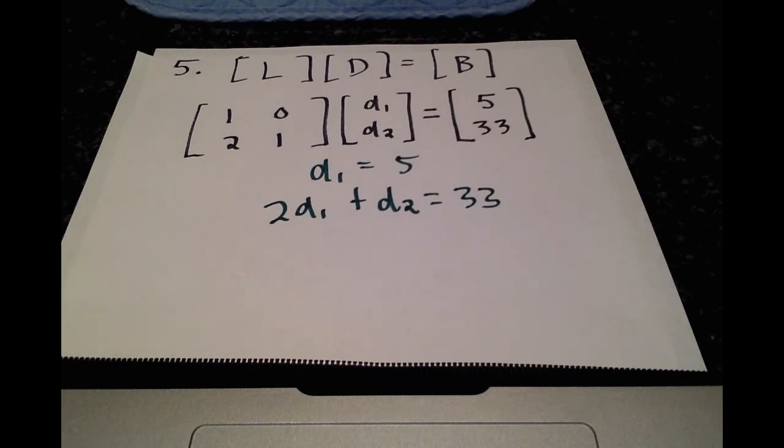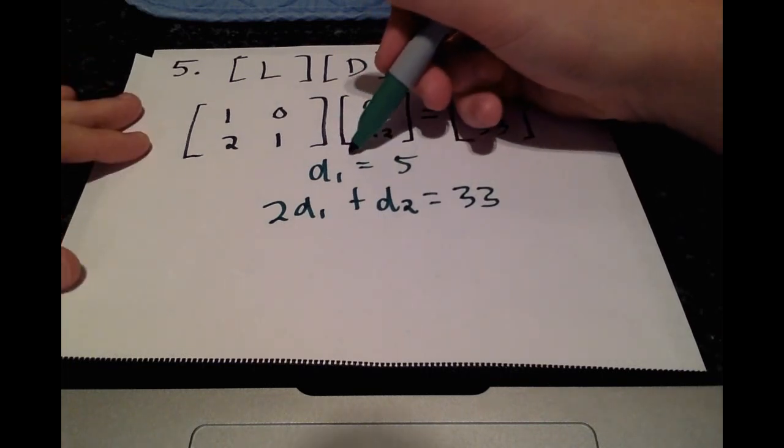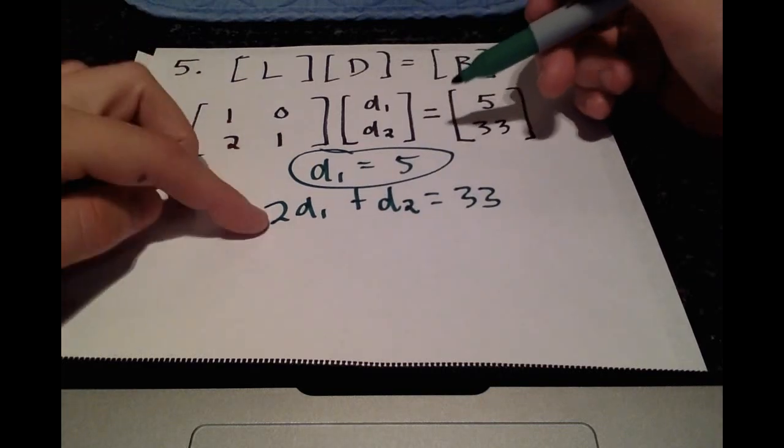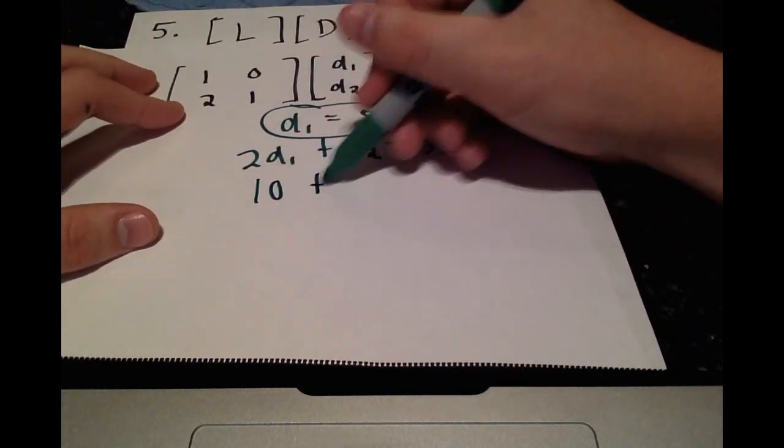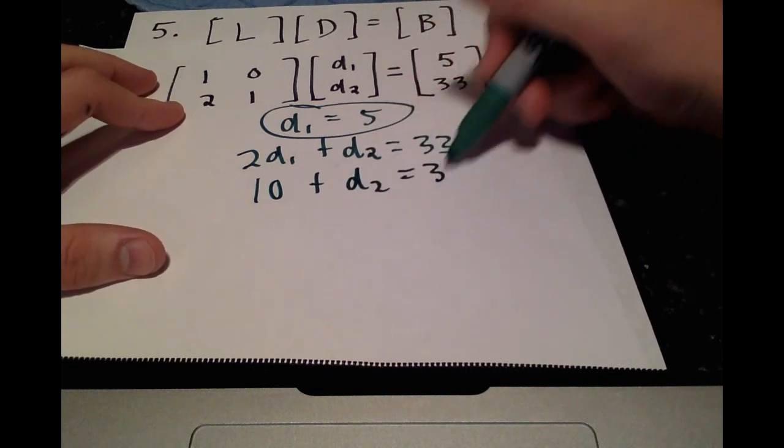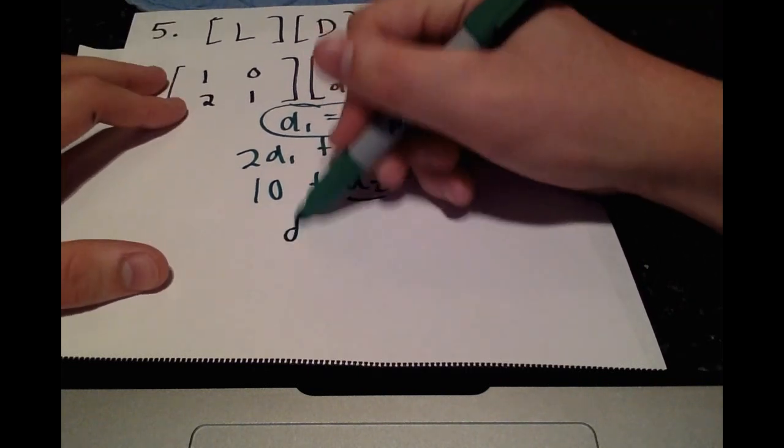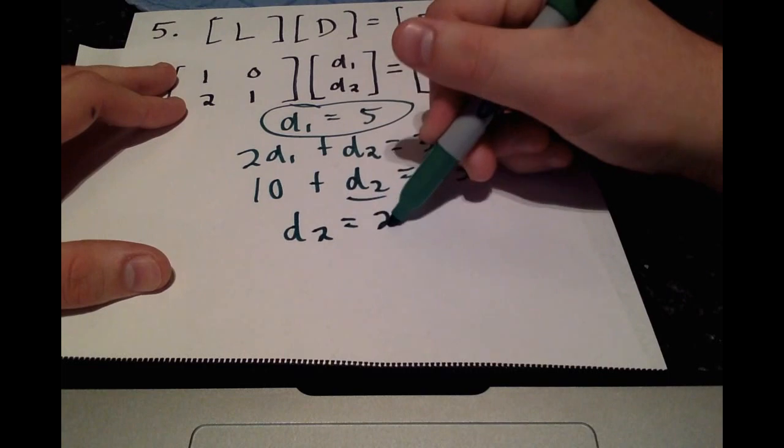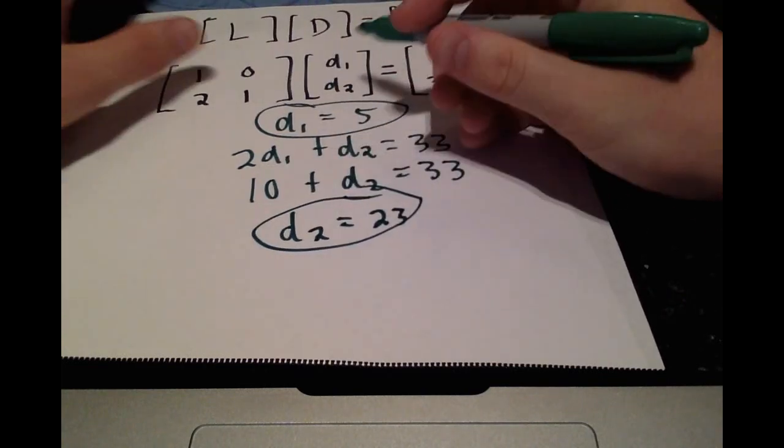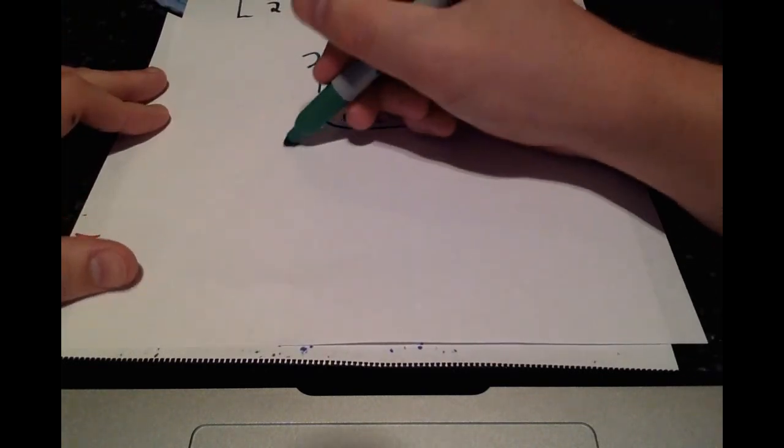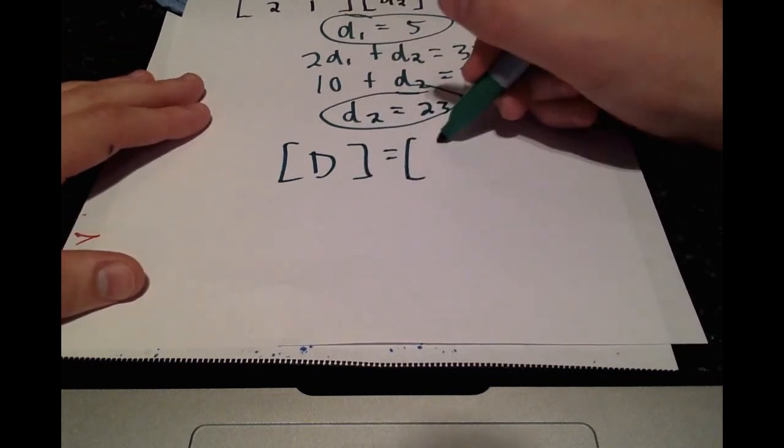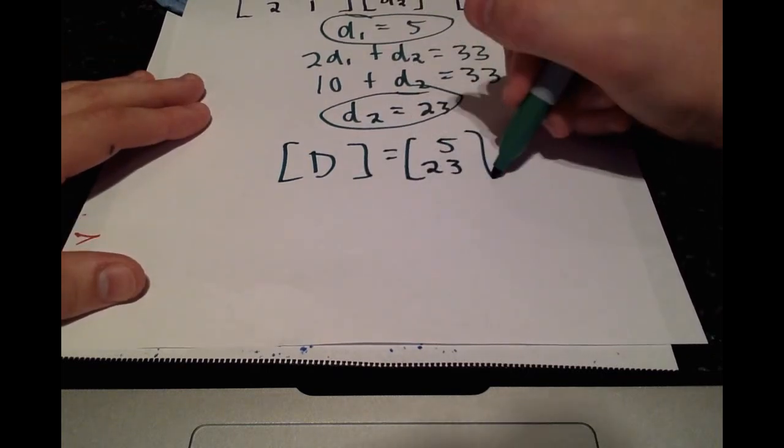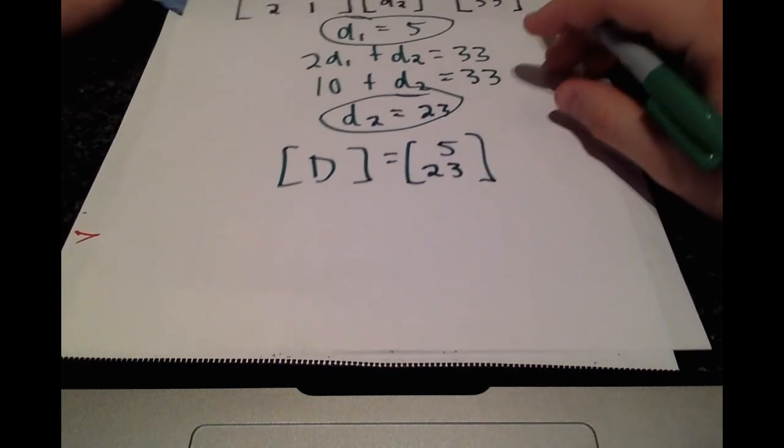Okay, so right away, you can see D1 equal to 5, which is very nice. Plugging this back in, we get 10 plus D2 equals 33. Not too bad. D2 is going to be equal to 23. So our D vector is just D1, D2, 5, 23. Not bad. If you ask me.